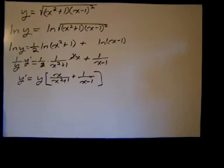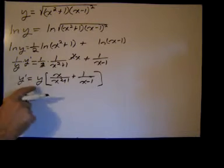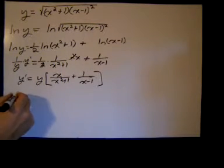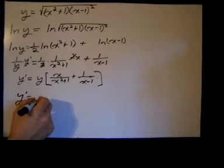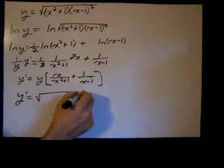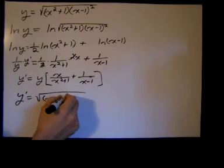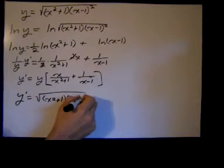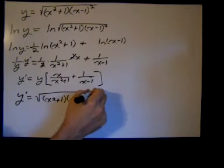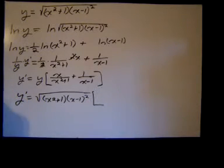So we substitute y, we know what y is. So y prime equals the square root of x squared plus one times x minus one squared times, do I really need to get a common denominator? Why not?